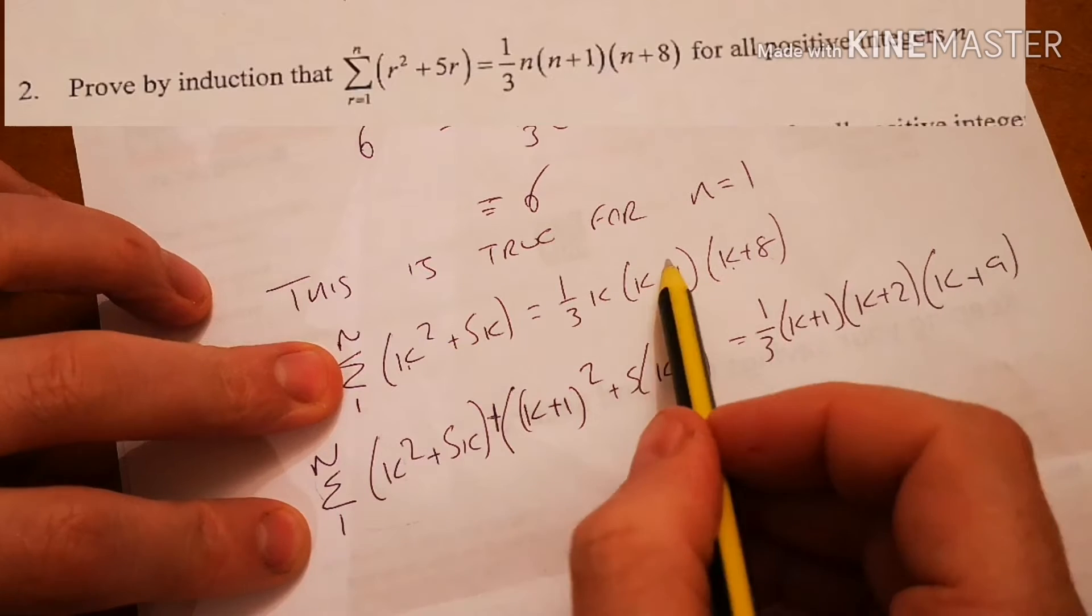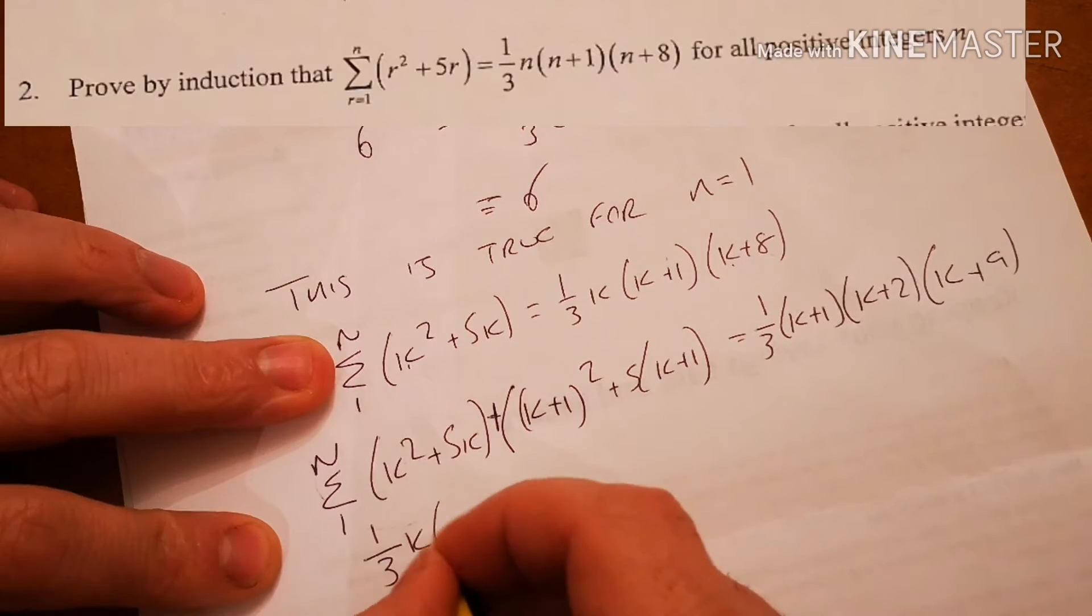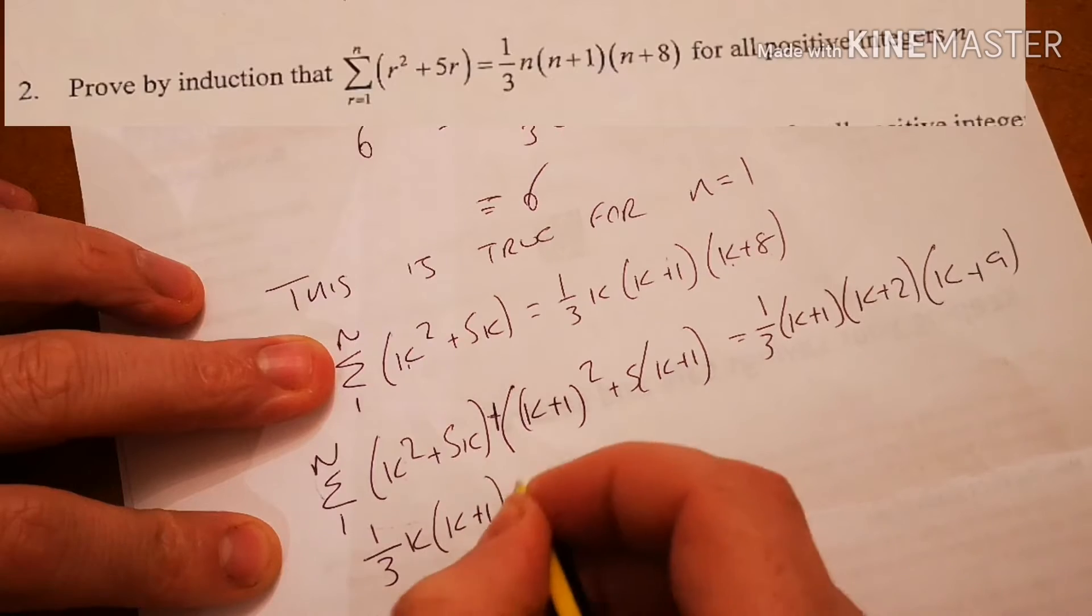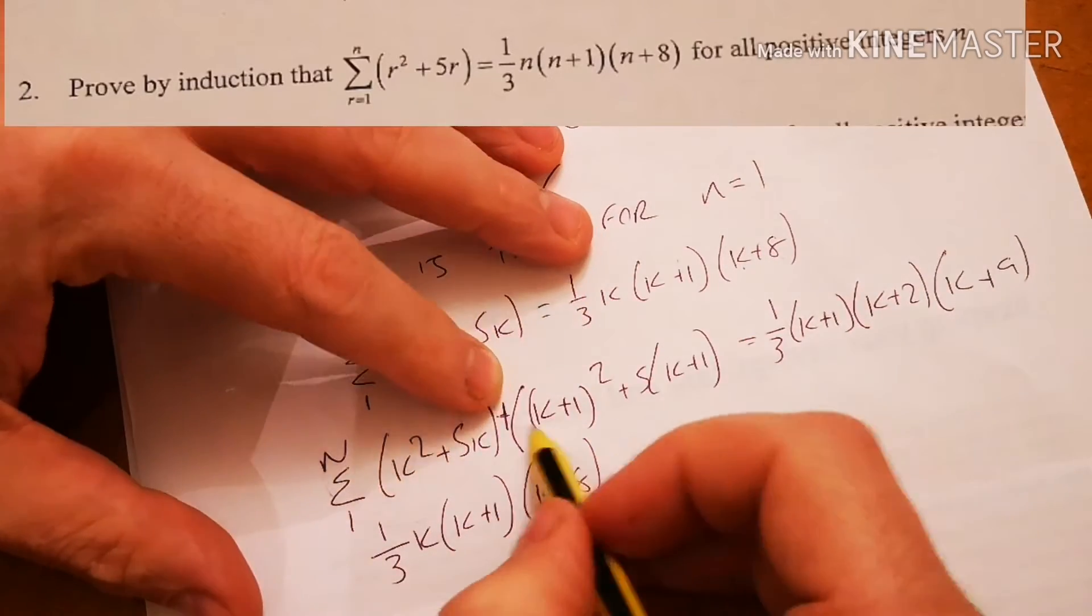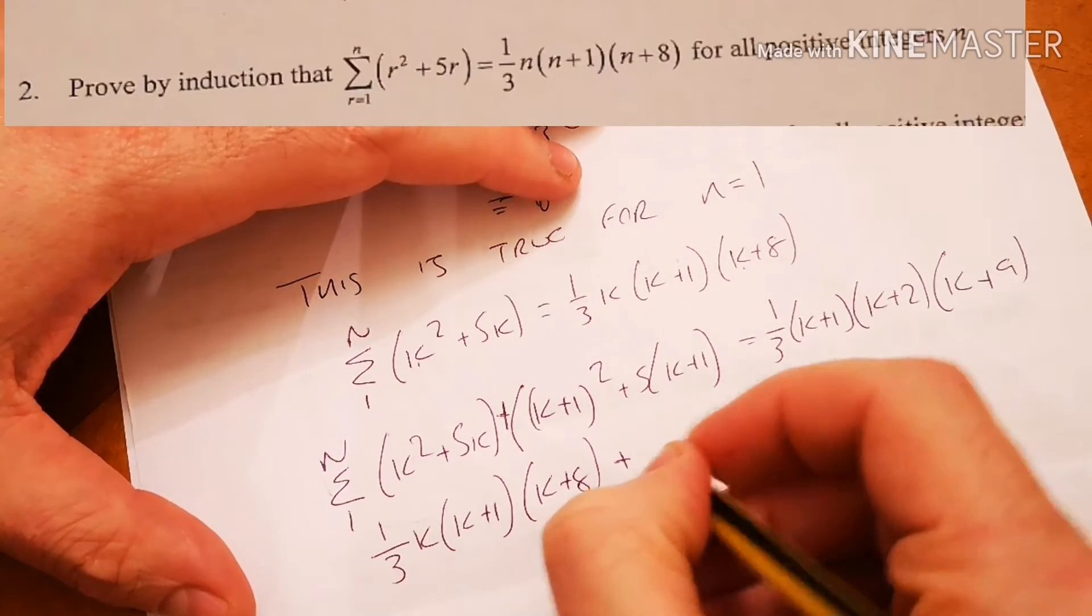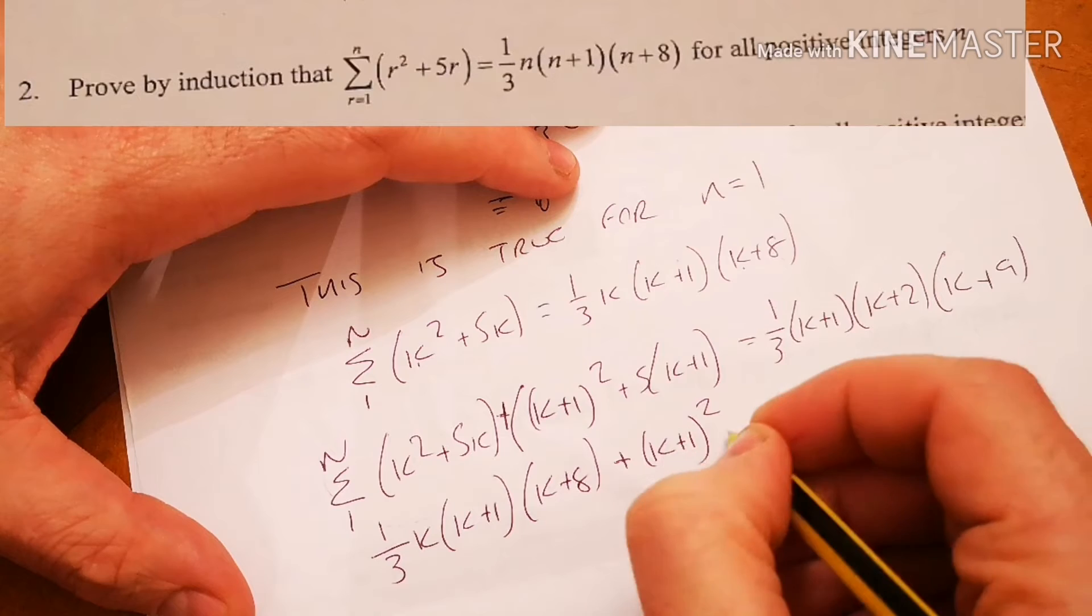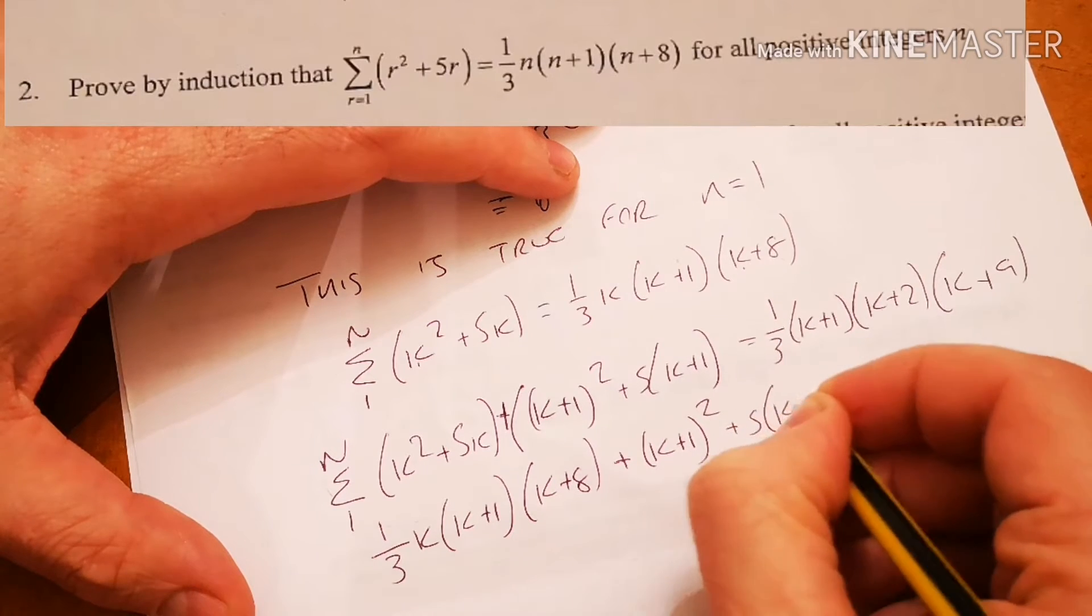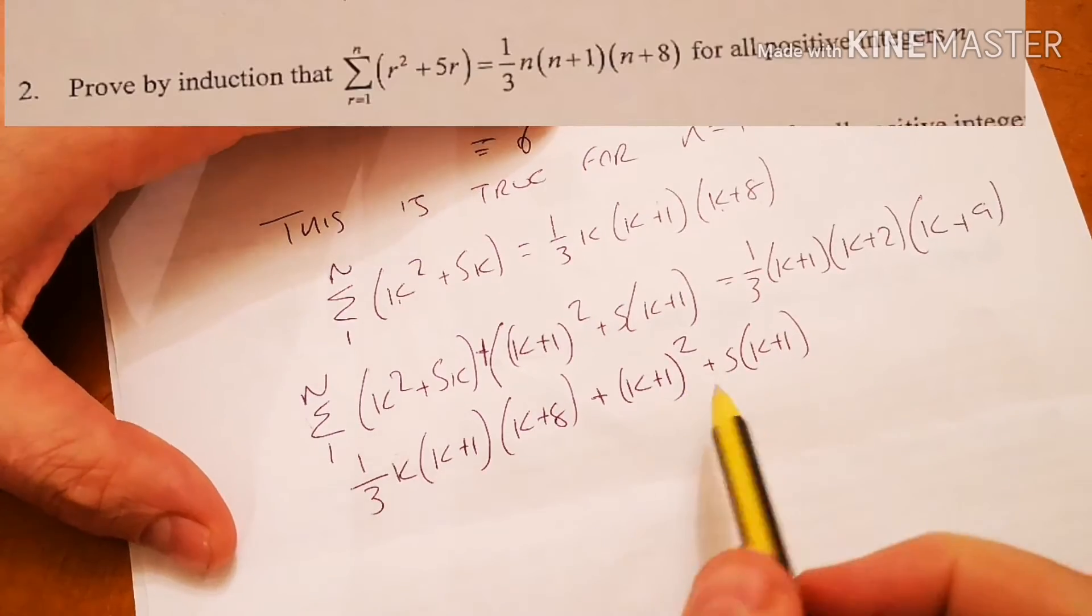This is obviously that one now, which I can replace with my original term. So I've got third, k, k plus 1, k plus 8, because these two are the same. And also plus that, plus k plus 1 squared plus 5 brackets k plus 1. I'm not going to copy all this out again, because my working out is getting a bit messed up.